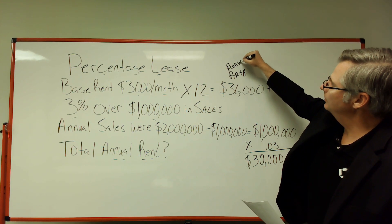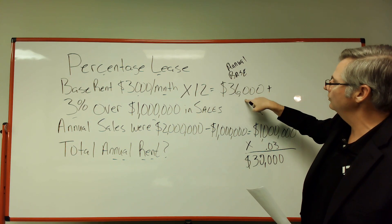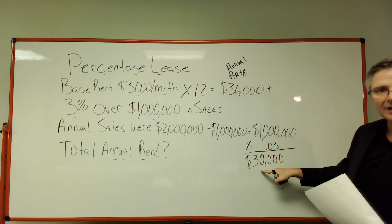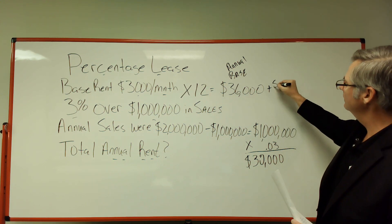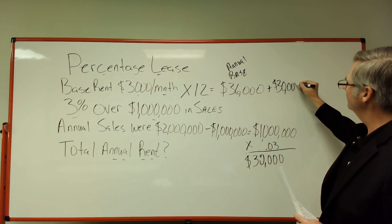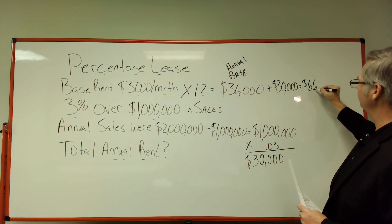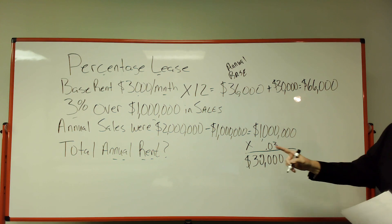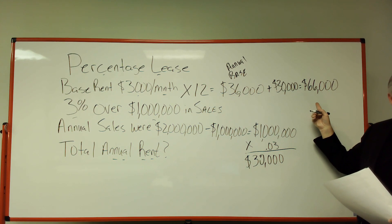But wait, that's not the total, because you also have the base rent annual - remember we took that monthly number and turned it into an annual number. Then we have an overage of thirty thousand dollars. So we're going to add that to the thirty-six thousand, and that gives us sixty-six thousand dollars. So our total annual rent would be sixty-six thousand dollars.